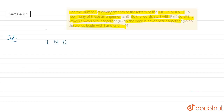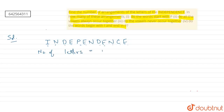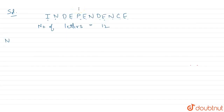So to solve, first of all let's write the word. The word is INDEPENDENCE: I, N, D, E, P, E, N, D, E, N, C, E. So how many letters are there? 1, 2, 3, 4, 5, 6, 7, 8, 9, 10, 11, 12. So the number of letters is 12. Let's find the number of arrangements for the word INDEPENDENCE.